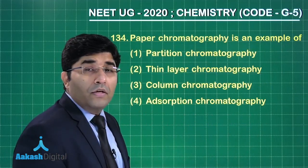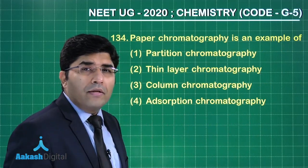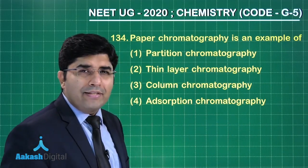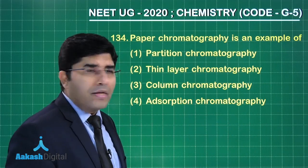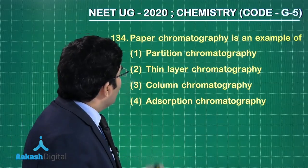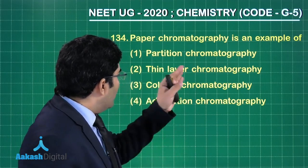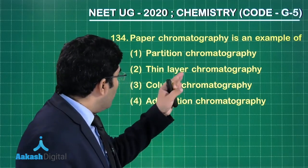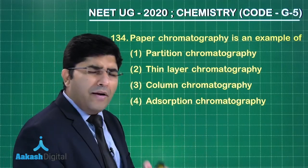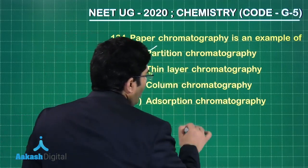Moving to the next question from organic chemistry — some basic principles and techniques. The question is based on chromatography: paper chromatography is an example of — partition chromatography, thin layer chromatography, column chromatography, or adsorption chromatography? The correct answer is option number one — partition chromatography.